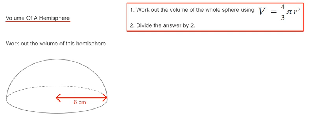Step one is you work out the volume of the whole sphere using the formula v equals four thirds times pi times r cubed, where v is the volume and r is the radius.